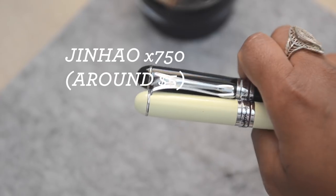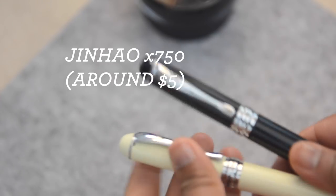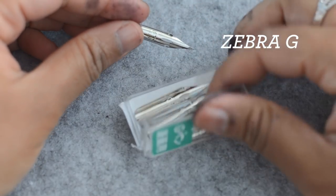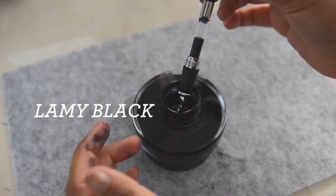So if you're following along at home you're going to need a Jinhao 750, I have a link in the description to where you can buy it, a G-nib of your choice, I'm going to use a Zebra G and some fountain pen ink.